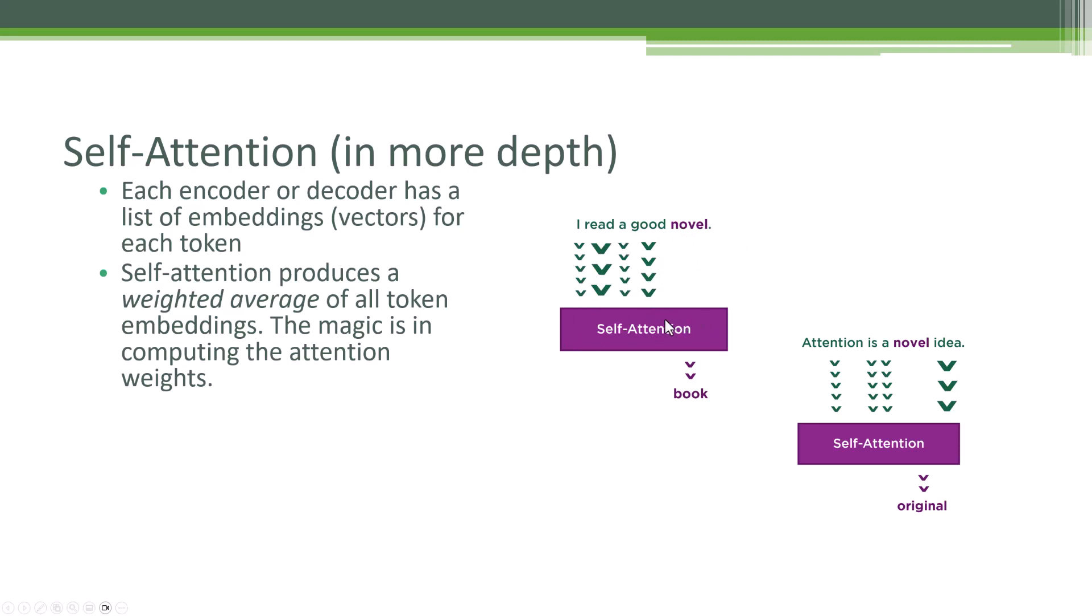The job of self-attention is to compute these attention weights to the other tokens before it. The magic that happens in self-attention will output a vector that basically means a book. Similarly over here, novel is looking at the other tokens. It might have a very strong weight with the token idea to figure out that we really mean something original or new here. And as a result of computing all of those weights that we have with the other tokens around it, by novel we really mean something original here.